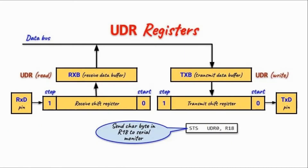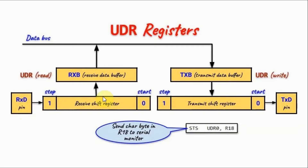The user data registers enable the transmission or reception of bytes over the serial port. For transmission, the byte is sent over the data bus to the transmit data buffer TXB, then to the transmit shift register where a start bit and stop bit are added, and the frame is serially shifted out via the TXD pin. Similarly, data from a peripheral is fed into the receive shift register via the RxD pin, transferred to the receive data buffer RxB, and placed on the data bus to the destination register.